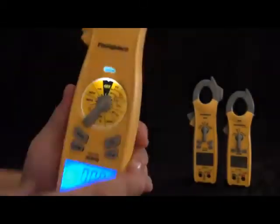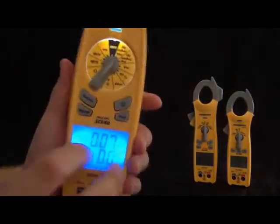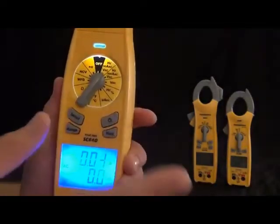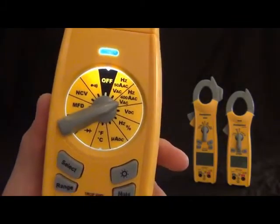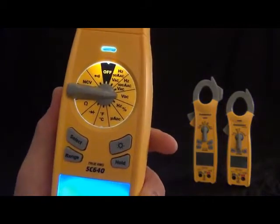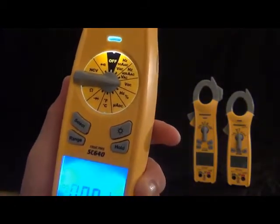Then we got volts DC, this is measuring with the leads. Then we got hertz and duty cycle, and this one is also with the leads. So when you need frequency or duty cycle, it'll show them both at the same time on the dual display.